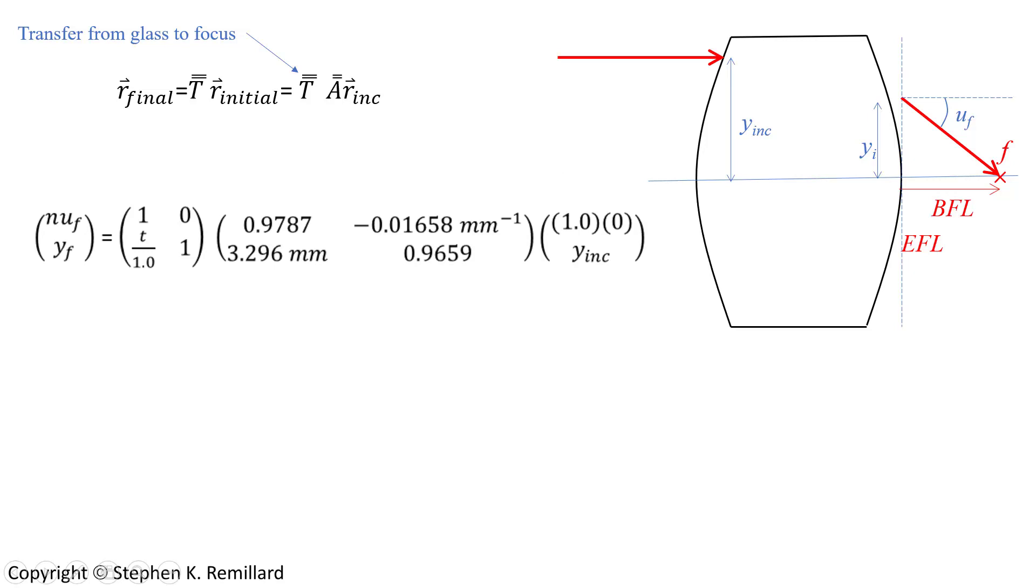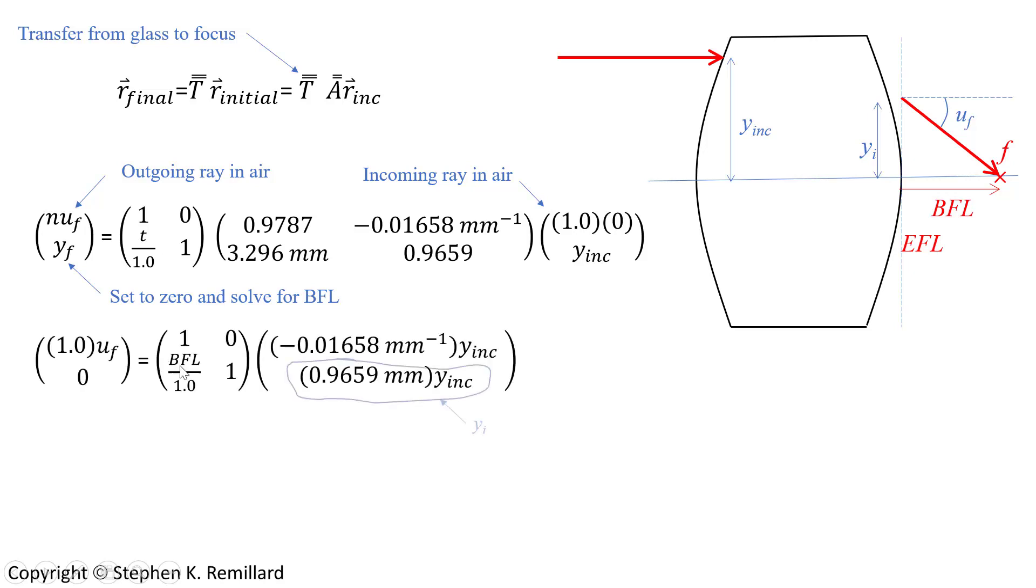The output ray is going to hit the optic axis. Y sub f is going to be zero, and travels at an angle u sub f in air, so n will be one. So if the first ray is the outgoing ray in air, and the second one is the incoming ray, if we set y sub f equal to zero, then this t that we solve for will be the back focal length.